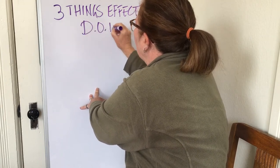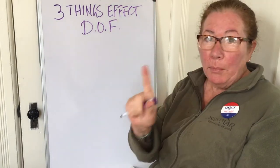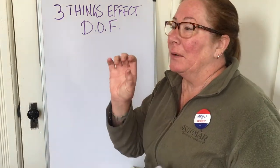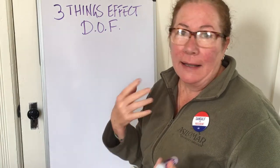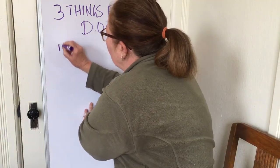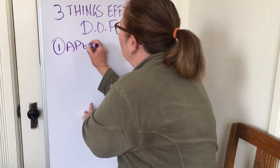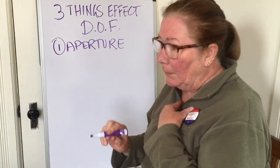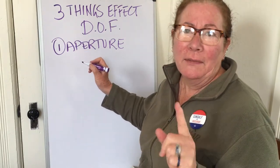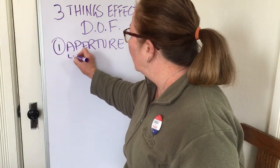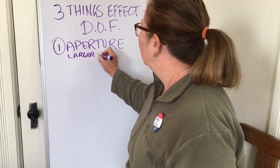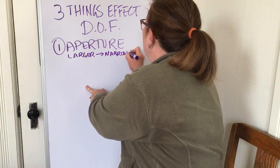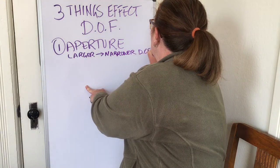Only three things affect depth of field and they're pretty straightforward. The number one thing is the aperture on your camera. Remember, the aperture is like a window — it's basically like your eye, like the pupil of your eye. Make sure you take notes on this: the larger the aperture, the narrower the depth of field.